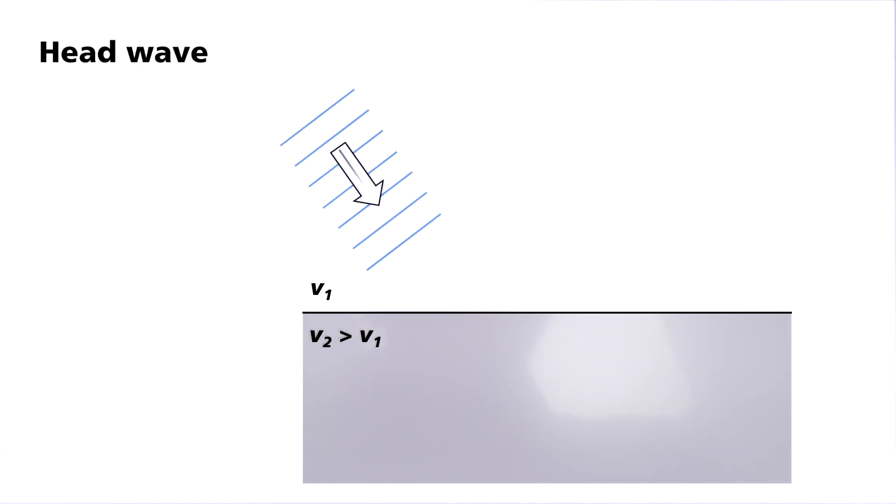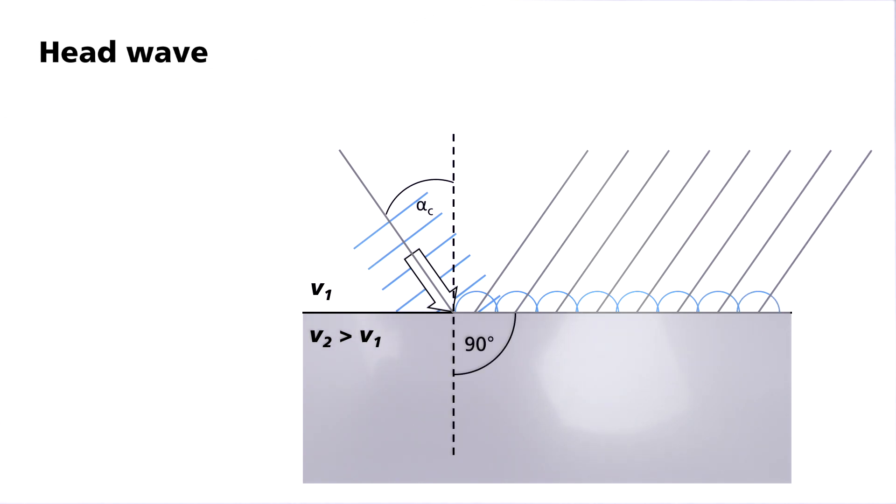If the wavefront impacts the boundary so that alpha 2 is equal to 90 degrees, the refracted path runs along the layer boundary with a faster propagation velocity V2 of the lower medium. The required angle of incidence is calculated as follows. Sine of 90 degrees divided by V2 is equal to 1 divided by V2. Sine alpha 2 is equal to the sine of the critical angle alpha C divided by V1. It follows that sine alpha C equals V1 divided by V2.